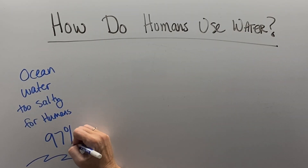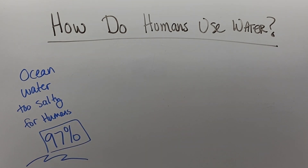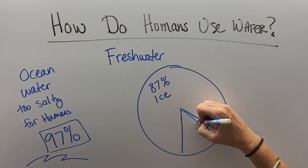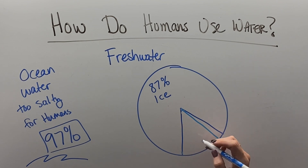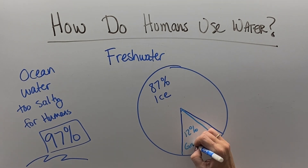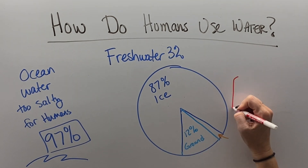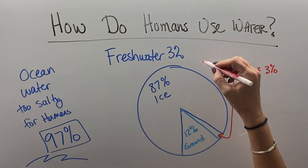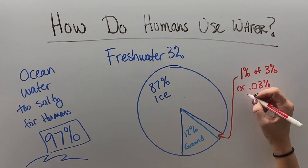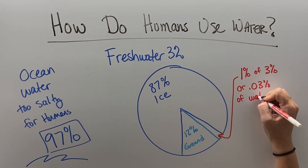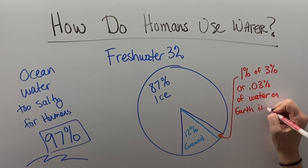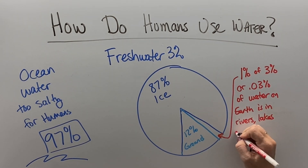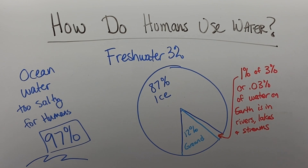One of the frustrating things about water on Earth is that 97% of it is trapped in super salty oceans, which is almost unusable for us. 87% of that remaining 3% of fresh water is ice, and 12% of it is underground. That means only 1% of the 3% of fresh water on Earth — or 0.03% of all the water on Earth — is actually on the surface and available for us to use easily and readily.